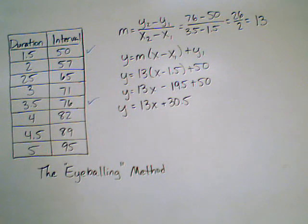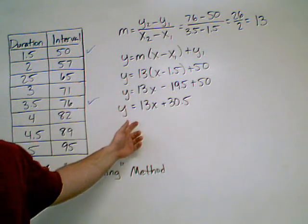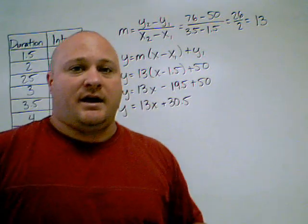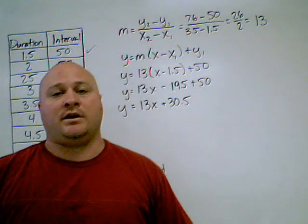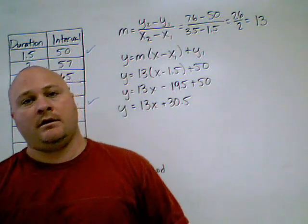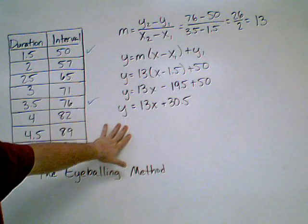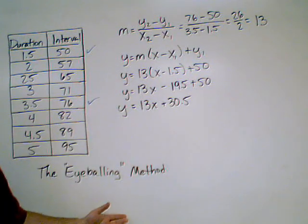What I want to use this formula for is to make a prediction. Now I'm not going to make a prediction yet. I haven't gotten to that question yet. But we're going to do that in part three. But this is how you create the line. And this is how you use the eyeballing method.